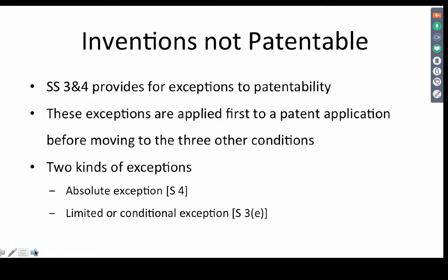Sections 3 and 4 are the negative requirements — negative in the sense that these things should not be there. If the invention falls into any of these categories, it will not be granted a patent. These exceptions are applied first because for something to be patentable subject matter, it has to first go through the exceptions.